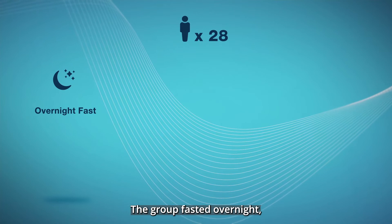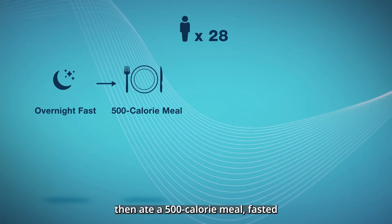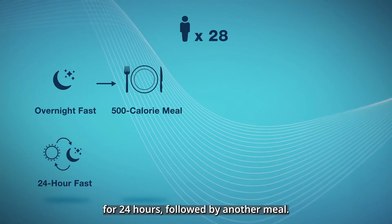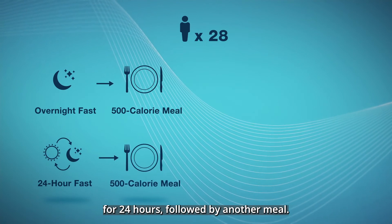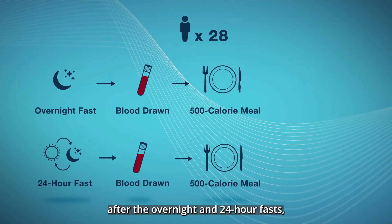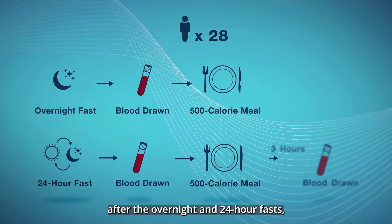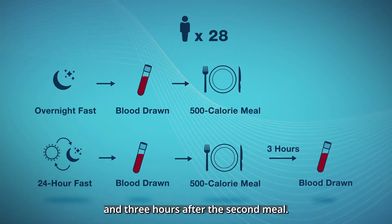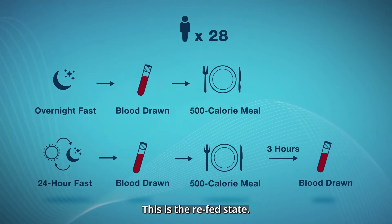The group fasted overnight, then ate a 500 calorie meal, fasted for 24 hours, followed by another meal. Research bloods were drawn after the overnight and 24-hour fasts, and three hours after the second meal. This is the refed state.